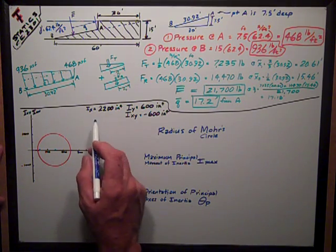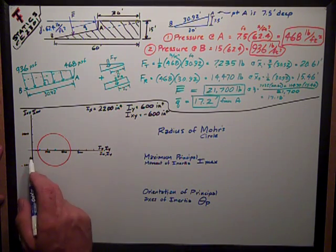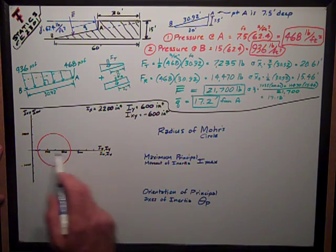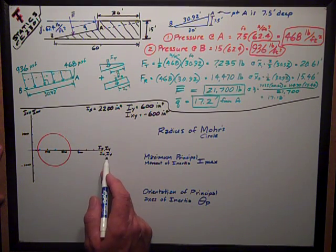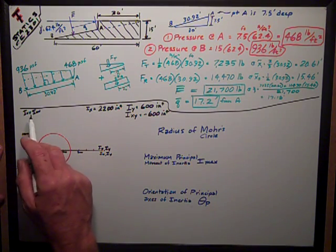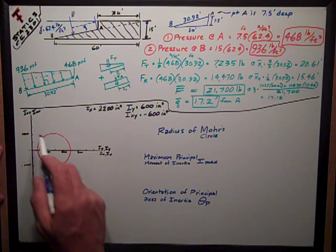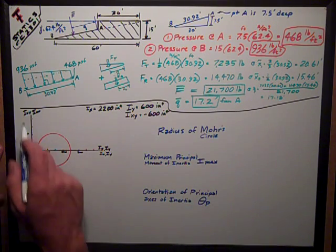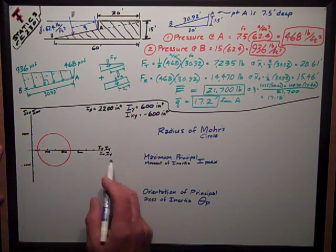Remember, I plot Ix and Iy on the horizontal scale. The product of inertia, or Iuv, is plotted on the vertical scale, positive up, positive to the right.